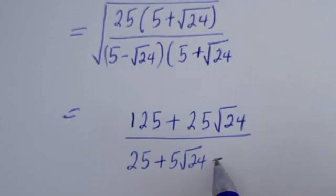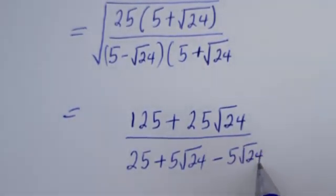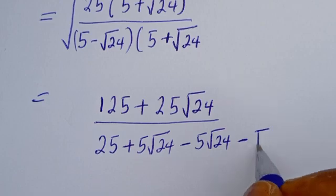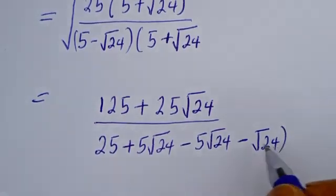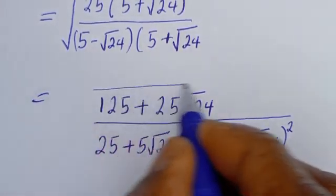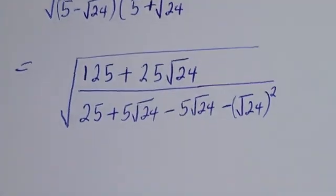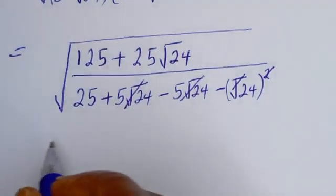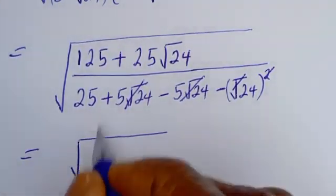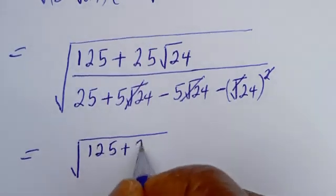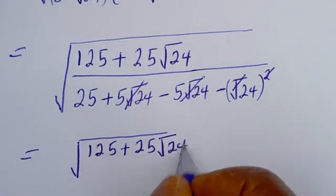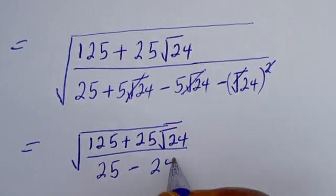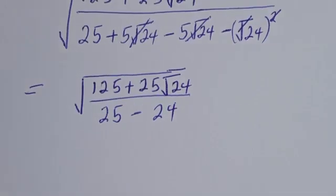Then minus root 24 times 5 is minus 5 root 24, then minus root 24 times root 24. From here, the plus 5 root 24 will cancel the minus 5 root 24, and we are left with the difference of squares in the denominator.